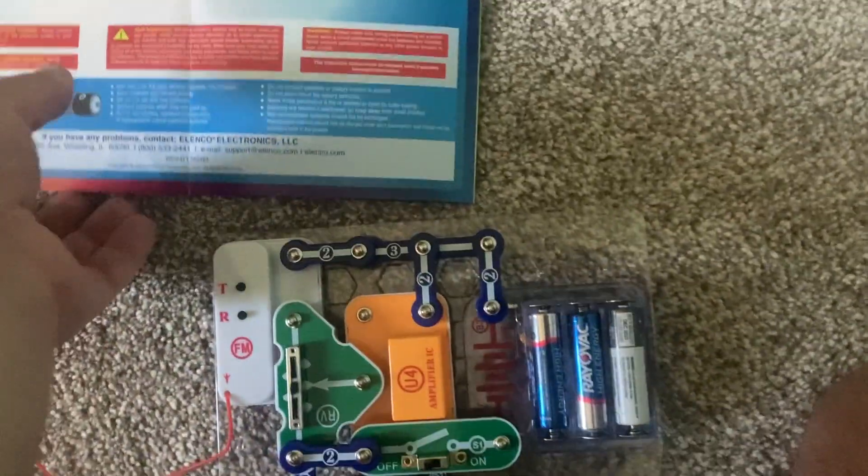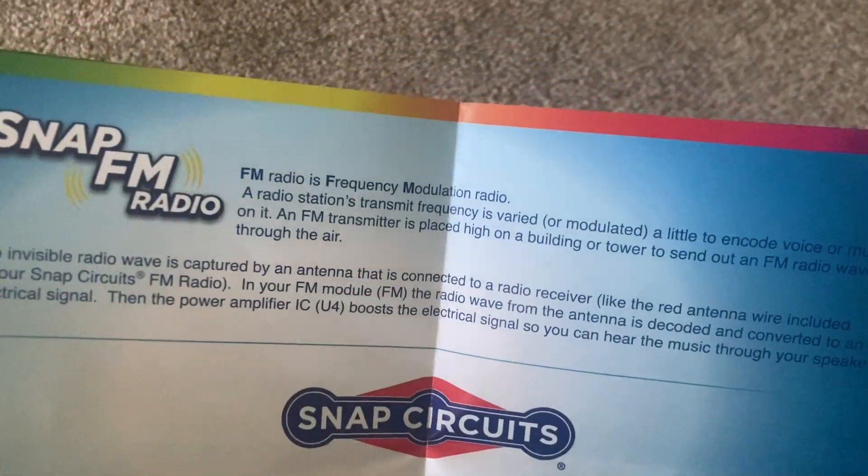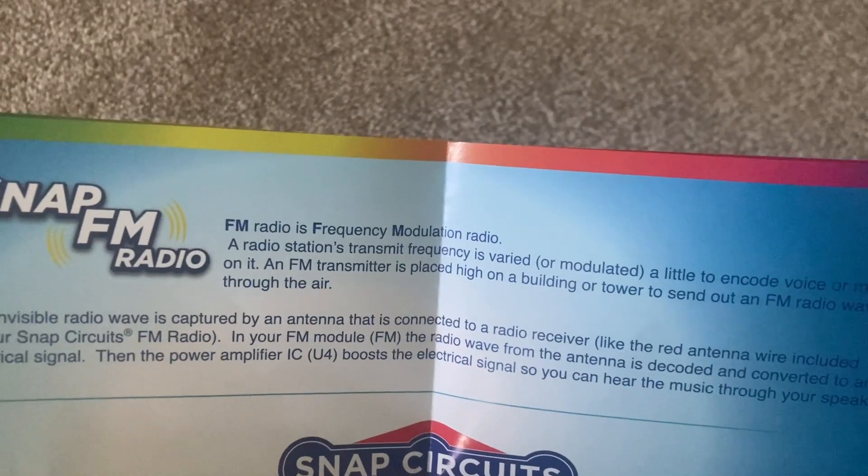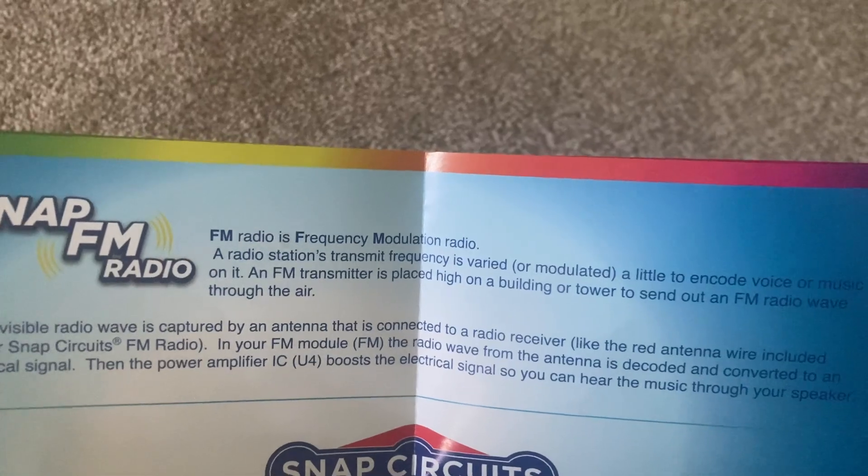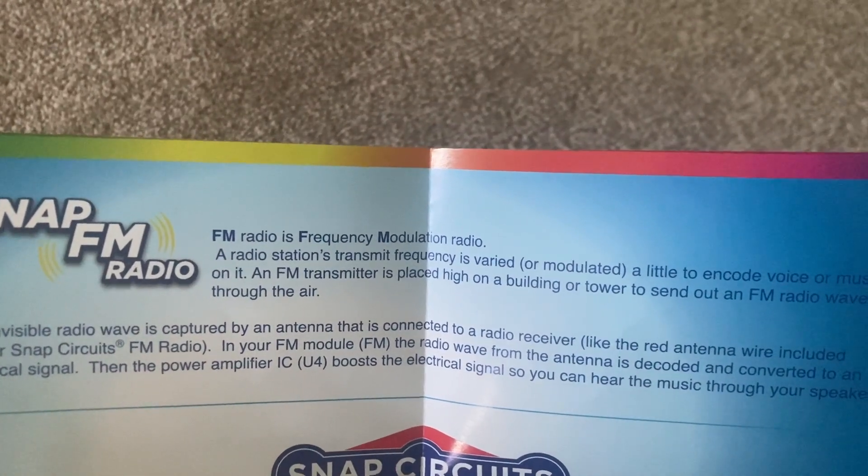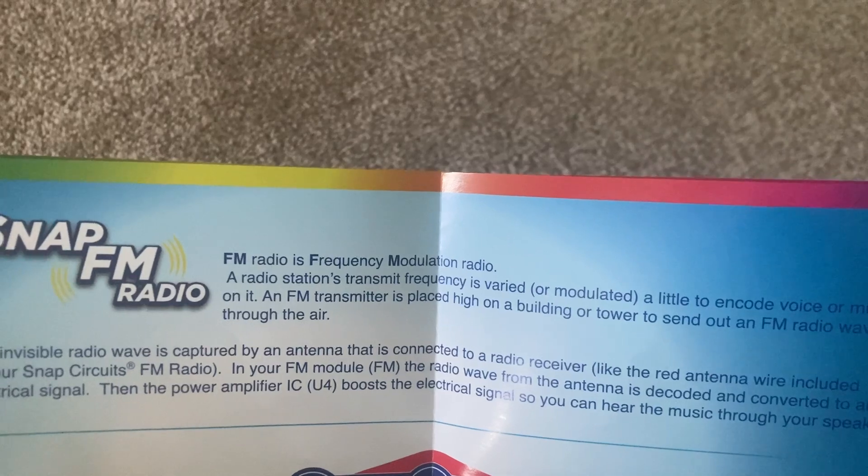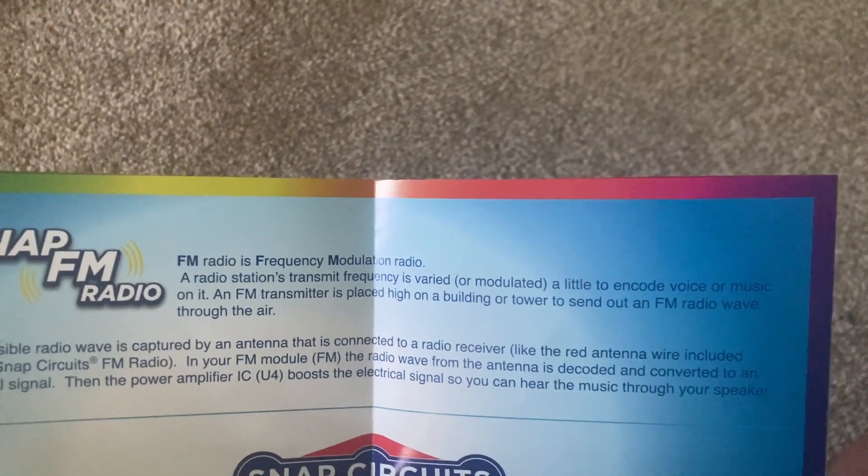Now, FM radio is different than AM radio. Well, AM stands for amplitude modulation. FM stands for frequency modulation. And in the case of an FM radio station, its transmit frequency is varied or modulated in order to encode voice or music on it.